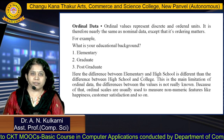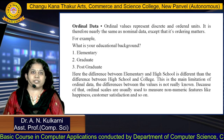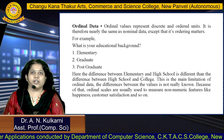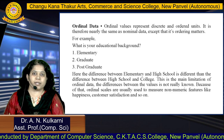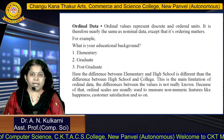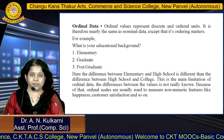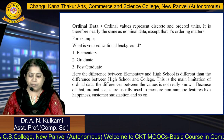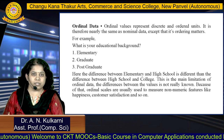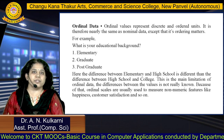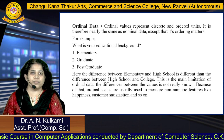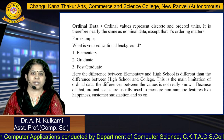Next, ordinal data. Ordinal values represent discrete and ordered units. Ordering is very important in case of ordinal data. For example, the question 'What is your educational background?' — the answer may be elementary, graduate, or post-graduate. Here ordering matters: first elementary, after that graduate, after that post-graduate. The main limitation of ordinal data is that the difference between values is not really known. Because of that, ordinal scales are usually used to measure non-numeric features like happiness, customer satisfaction and so on.